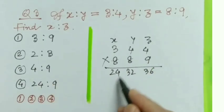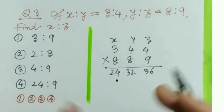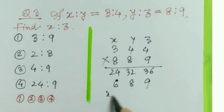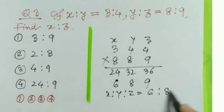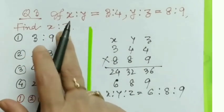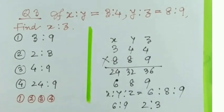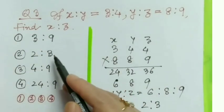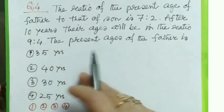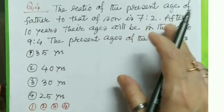Now I multiply: 8×3=24, 8×4=32, 9×4=36. Simplifying by dividing by 4 gives x:y:z = 6:8:9. The question asks for x:z, which is 6:9. Simplifying by dividing by 3 gives 2:3. So option 2 is the correct answer.